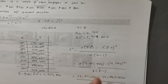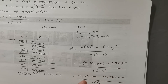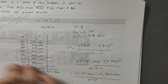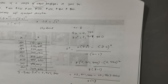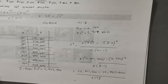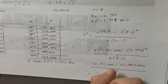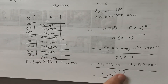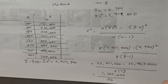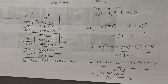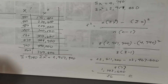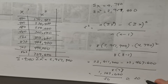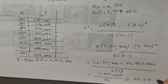Subtracting the numerator: 23,611,200 minus 22,467,600 gives 1,143,600. Then we divide by the product of 8 times 7, which is 56. So 1,143,600 divided by 56 gives us 20,421.43. We approximate our result to two decimal places.